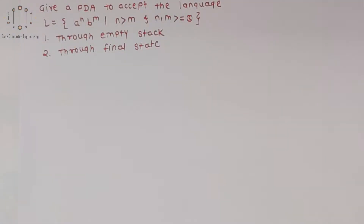In this video we will see how to design a pushdown automata for a^n b^m where n is greater than m, and n, m are greater than or equal to zero. We also have to show this using empty stack as well as final state. In the previous video we already saw how to design a pushdown automata for a^n b^m where both a and b have the same power.